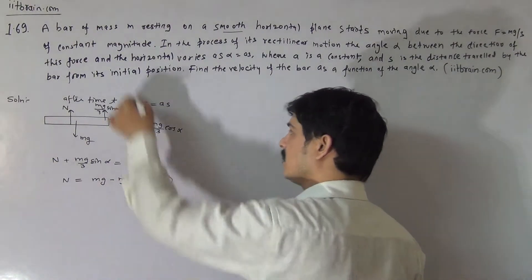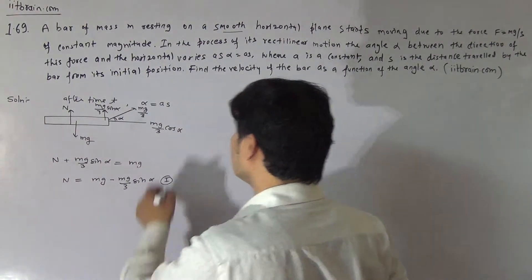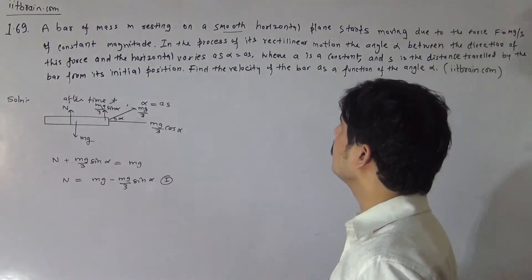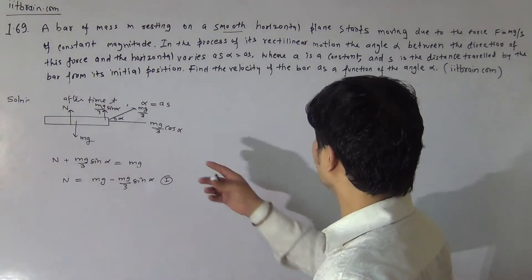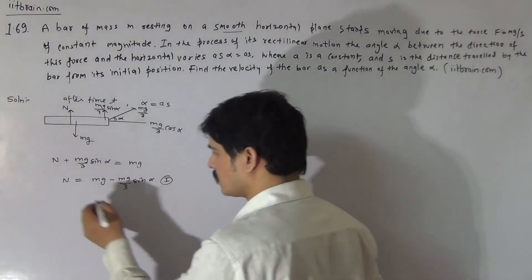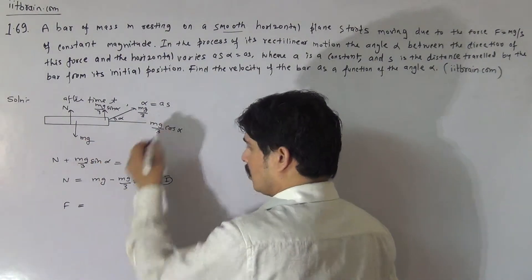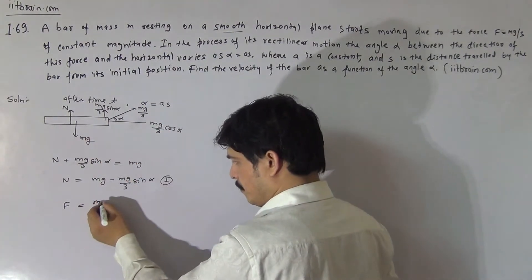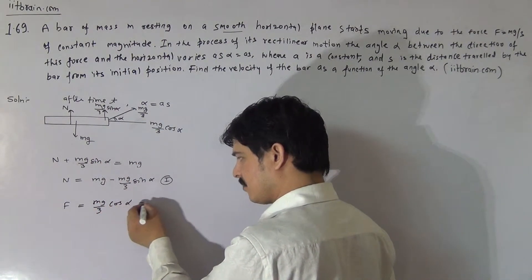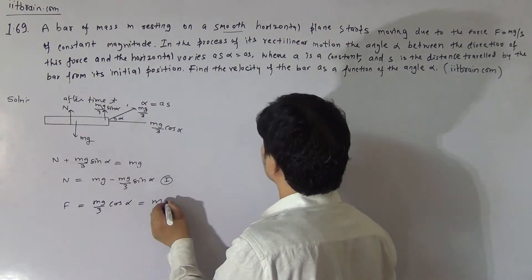That is the first equation in the vertical direction. In the horizontal direction, the force pulling the body is Mg by 3 cos alpha. So the force pulling the body horizontally is Mg by 3 cos alpha.